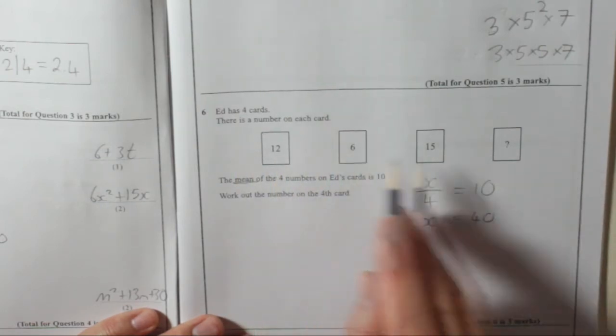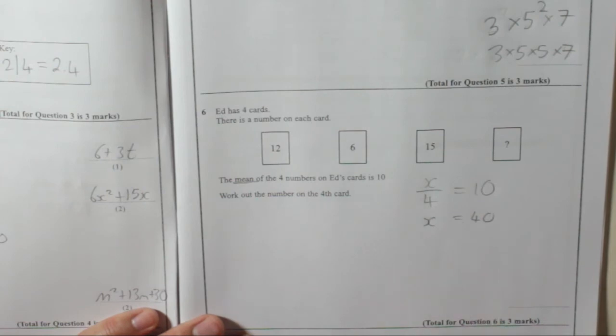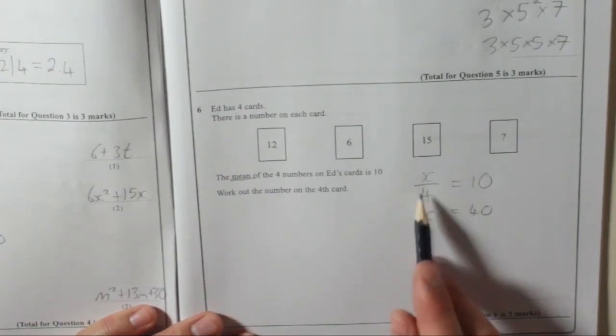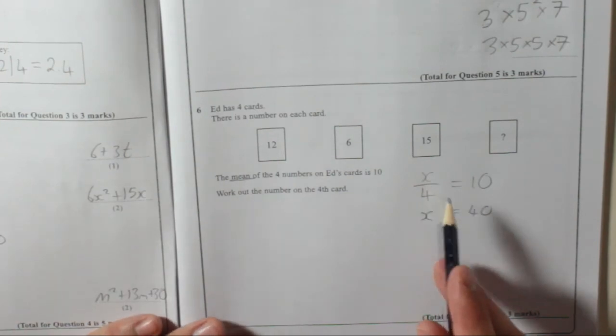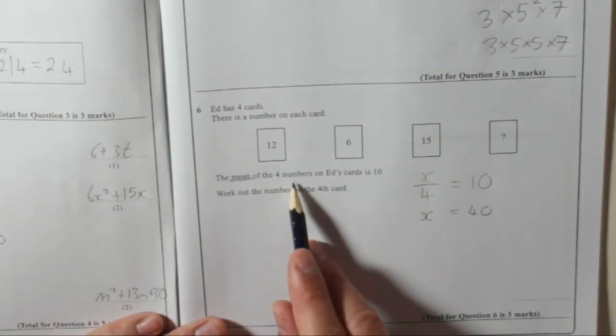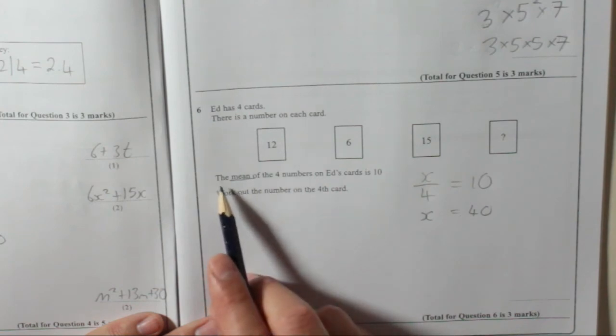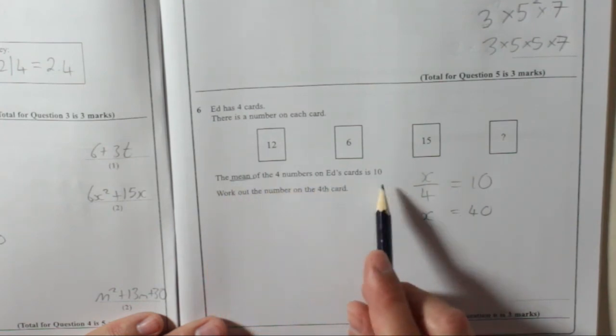So all you've got to do is add those up and find out what's left. Now, I know you don't like using equations. You don't have to use an equation for this. You could just think of it logically in your head. The mean of the four numbers - so I'm starting again sort of now - the mean of the four numbers on Ed's cards is ten.